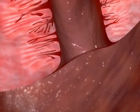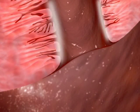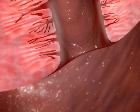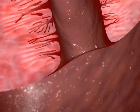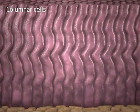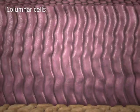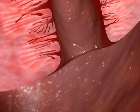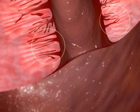In contrast, the endocervical canal, which leads from the ectocervix to the endometrial cavity, is lined by columnar glandular cells, and complex infolding of this epithelium forms numerous crypts.